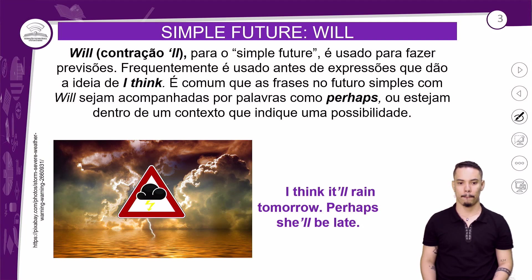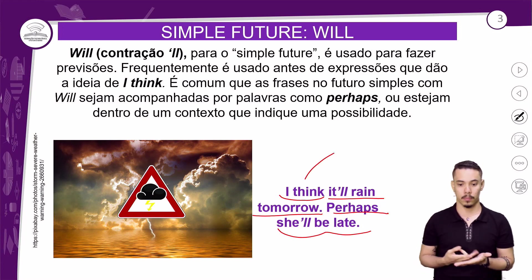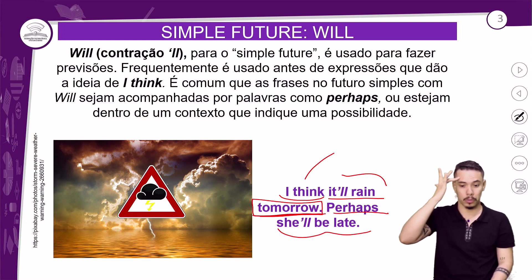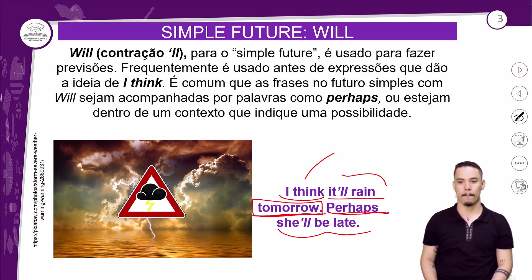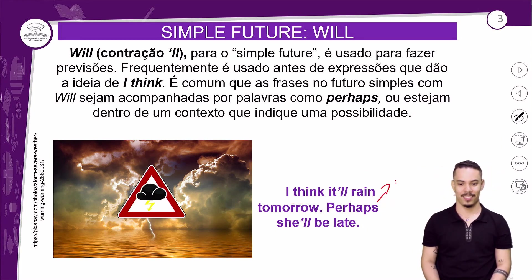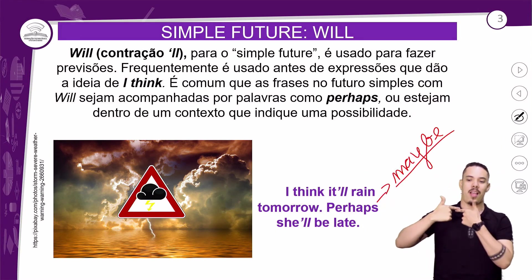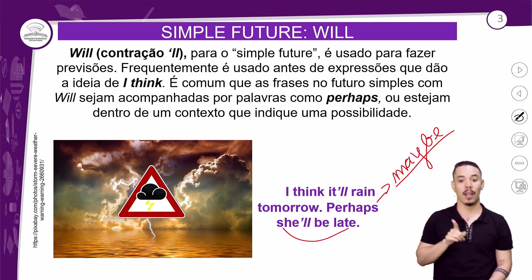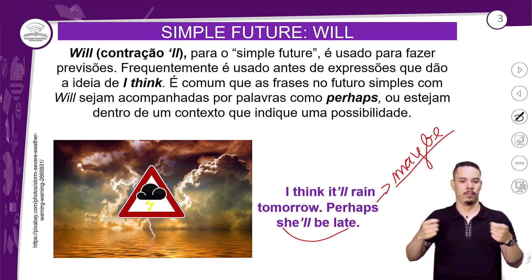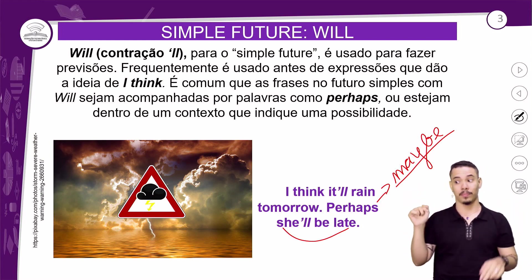Look at these example sentences: 'I think it will rain tomorrow' — Eu acho que choverá amanhã. We have a future time expression: 'tomorrow.' 'Perhaps she will be late' — Talvez ela esteja atrasada. Or with 'maybe': 'Maybe she will be late.' There is a difference between the two futures: 'will' is for more uncertain future, while 'going to' (in the next class) is for more planned future.